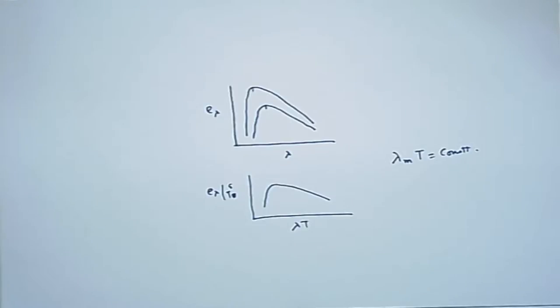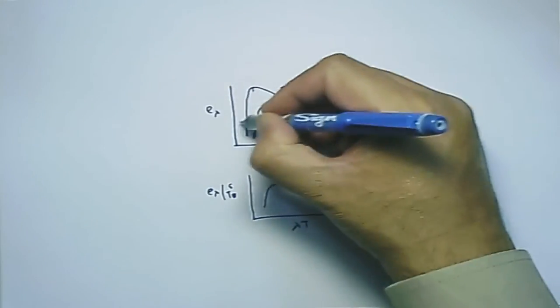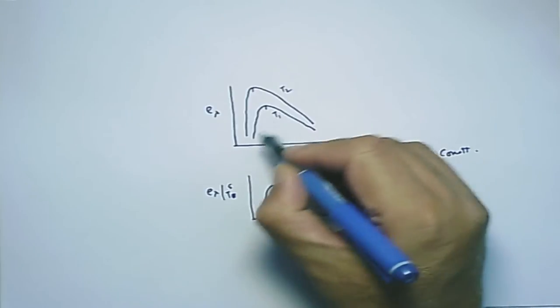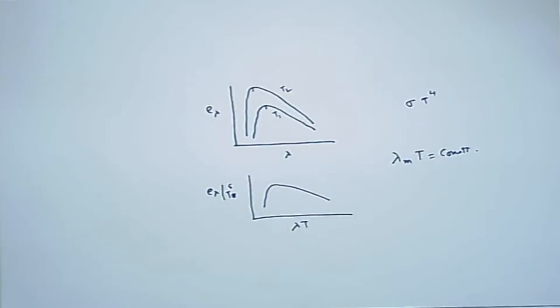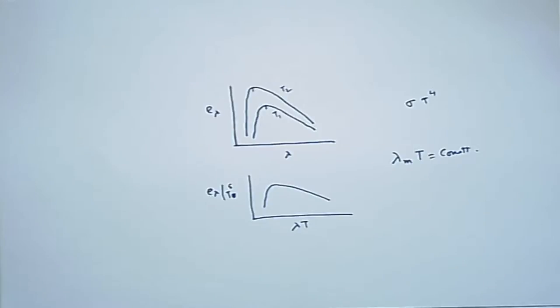This is called the universal black body radiation curve — an experimental fact that all curves obtained at different temperatures T1, T2, etc. can be unified. Wien's displacement law says lambda_m times T is constant. Stefan's law says the total area under the curve — total power radiated — is proportional to T^4. Only for the shape of this curve did Planck have to make his hypothesis.